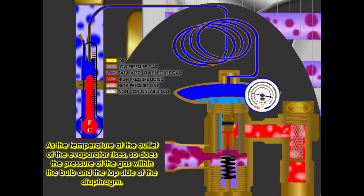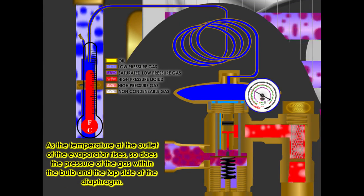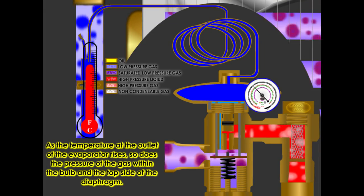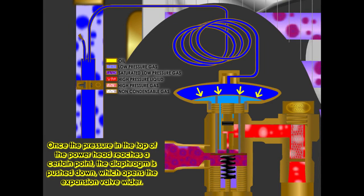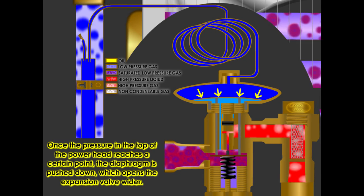As the temperature at the outlet of the evaporator rises, so does the pressure of the gas within the bulb and the top side of the diaphragm.